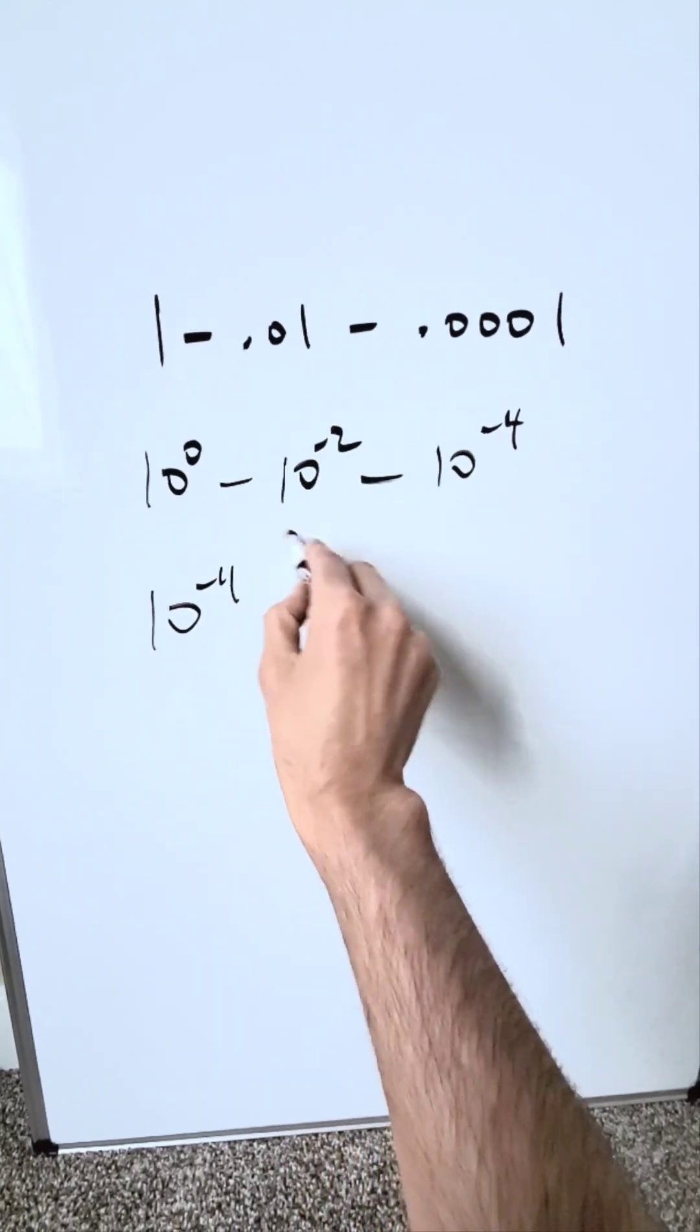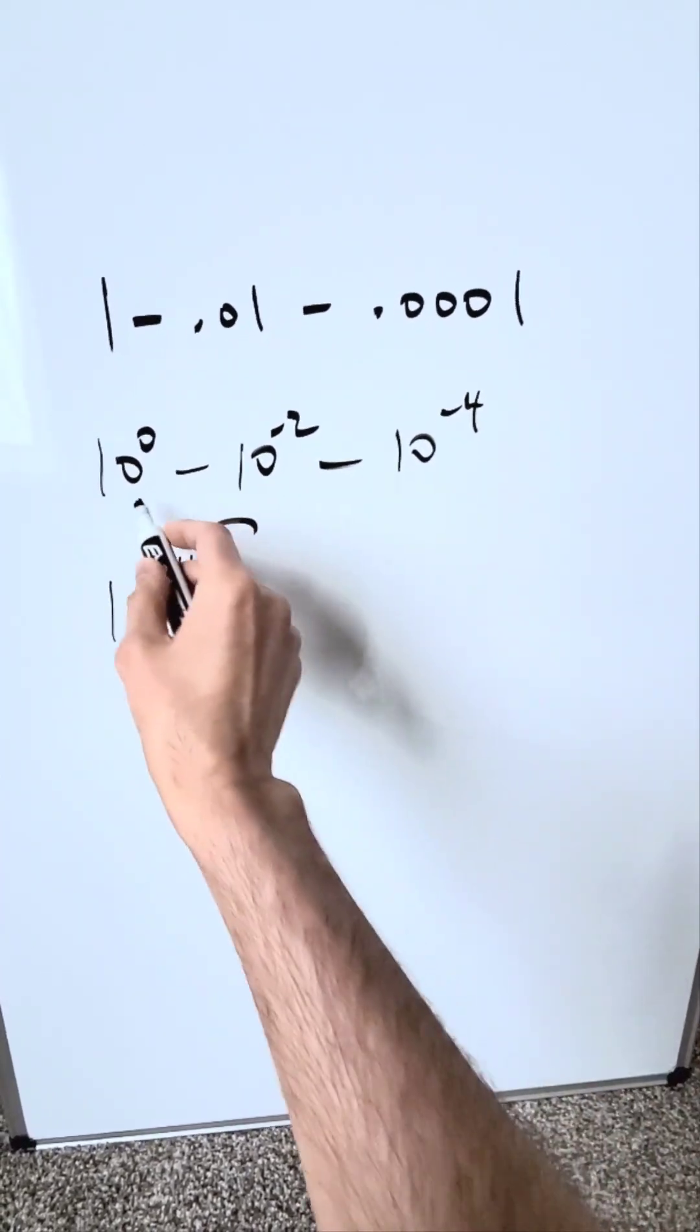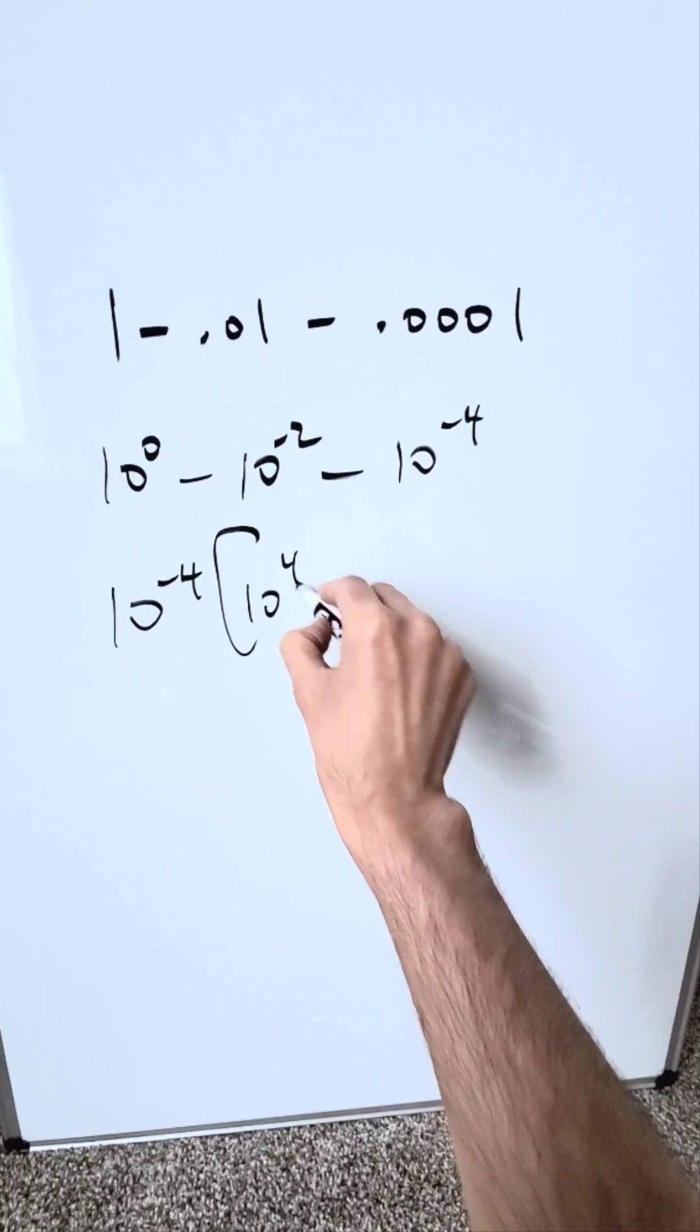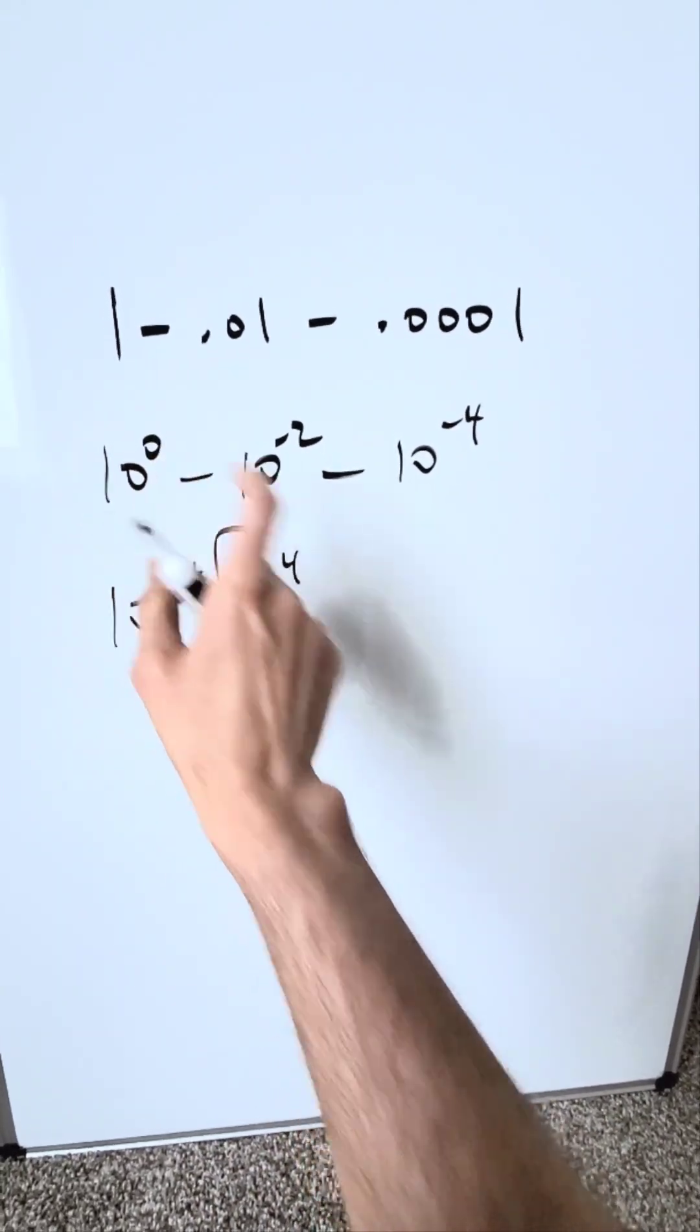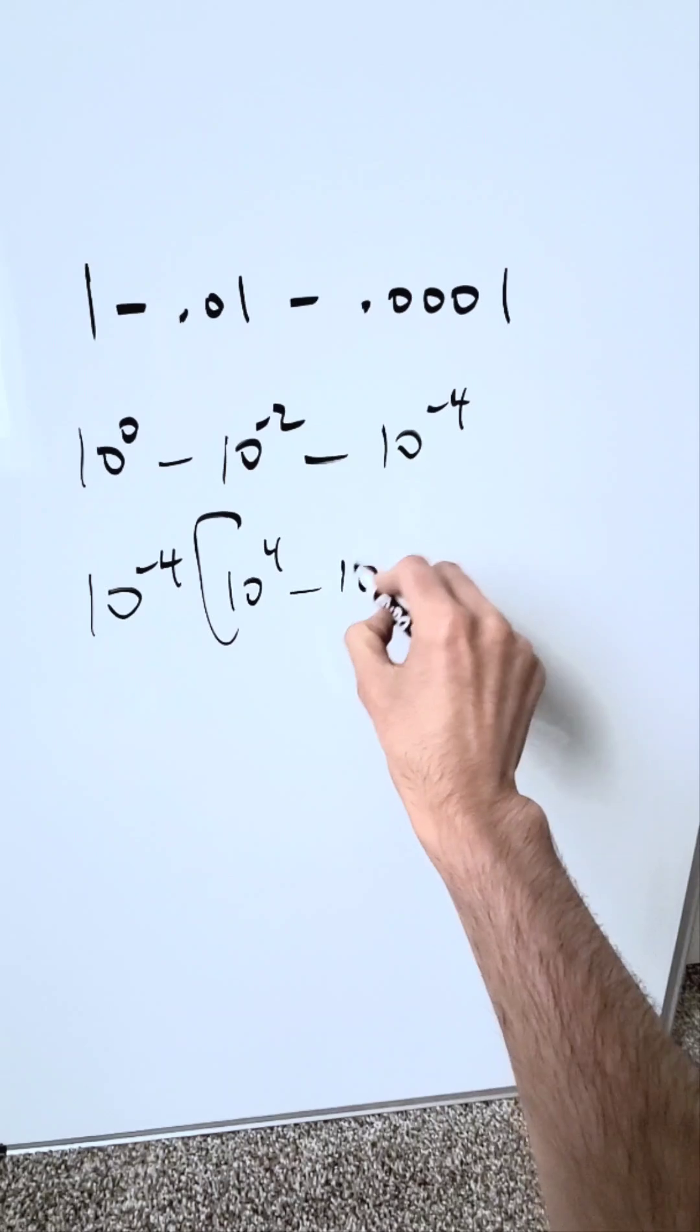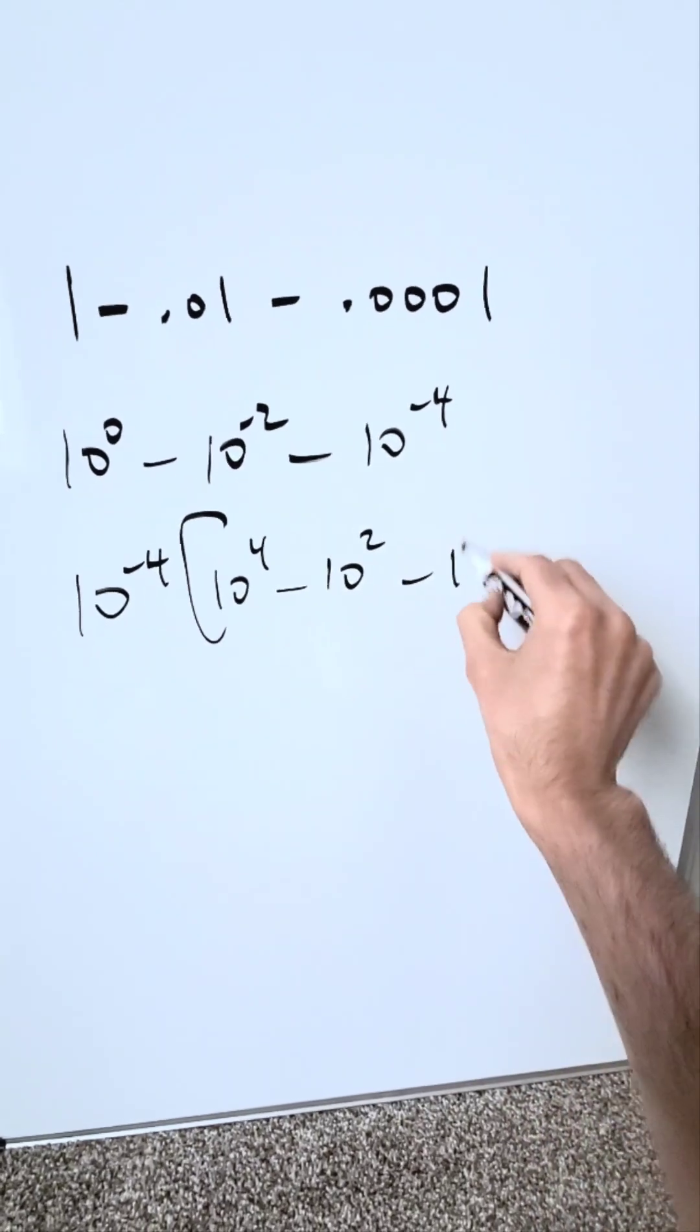I'll isolate a common term. It's 10 to the minus 4 because it goes in all of these. It comes in here, 10 to the power of 4 times. Same basis, exponents add. Minus 4 plus 4, you'll get that 0. It'll come in the next term, 10 to the 2 times. It'll come in itself one time.